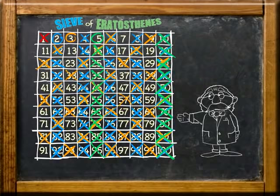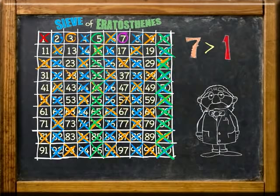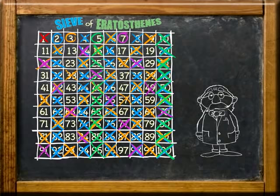Looking at the table, our next unmarked number is 7. It is prime because it is greater than 1 and only has 1 and itself as factors. We'll circle it and then proceed to mark its multiples. Most of 7's multiples are already crossed out because those multiples have more than 2 factors.